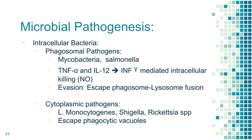Intracellular bacteria are divided into phagosomal pathogens — mainly Mycobacteria and Salmonella — and cytoplasmic pathogens. Phagosomal defense works through TNF-alpha, interleukin-12, and interferon-gamma mediated nitric oxide toxicity intracellularly. They evade this by preventing phagosome-lysosome fusion. Cytoplasmic pathogens like Listeria monocytogenes, Shigella, and some Rickettsial species swim in the cytoplasm and avoid phagocytic vacuoles.